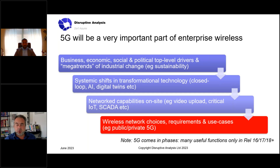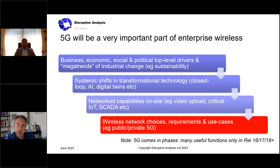IT trends feed through to networking trends — whether it's uploading video from a quality sensor on a production line, critical communications transitioning from push-to-talk to push-to-video, industrial sensing, control of industrial equipment, or cloud-side IT rather than OT (operational technology). All of these feed through to network choices and requirements, and particularly drive the big debate around public versus private connectivity — whether it's delivered by a service provider, owned by the enterprise, or built or outsourced to a systems integrator.